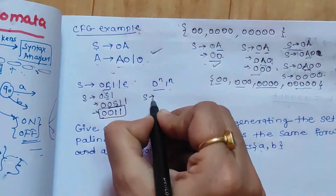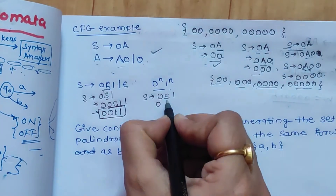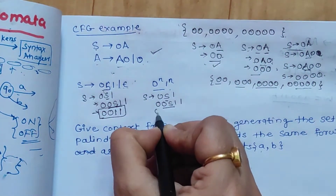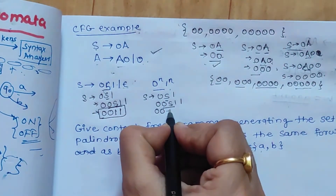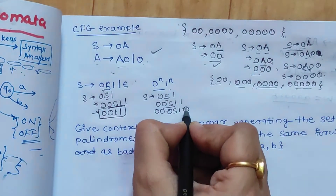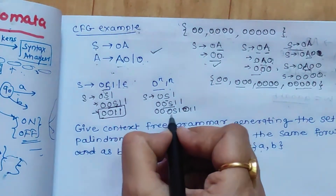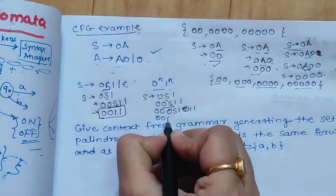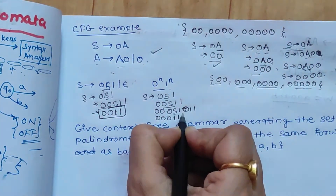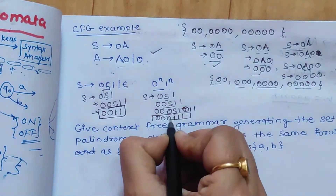To generate another string, S gives 0S1, then S is replaced with 0S1 giving 00S11, then S is replaced with 0S1 giving 000S111, and finally S is replaced with epsilon — giving nothing — so the string 000111 is generated.